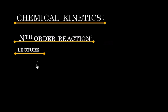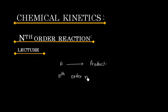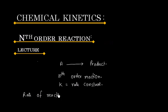In this lecture, we will discuss nth order reaction. Let us consider a general reaction: reactant to product. This is a nth order reaction with rate constant k given. So we can write the rate of reaction as k times concentration of A to the power n.